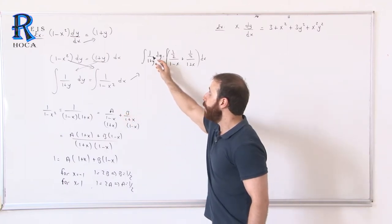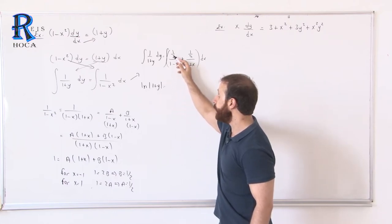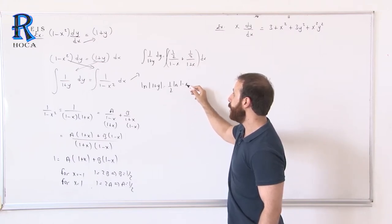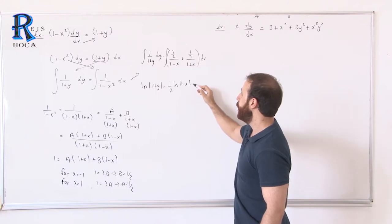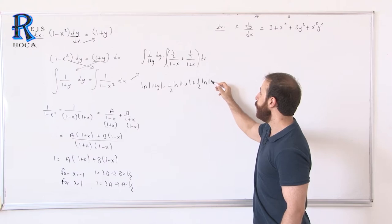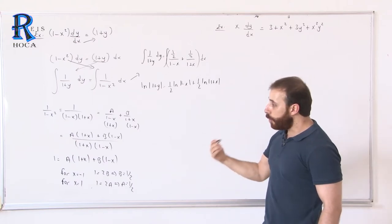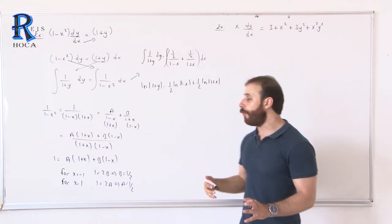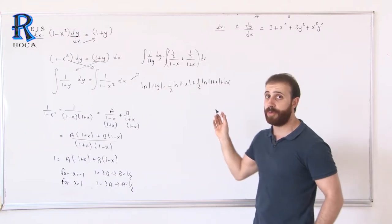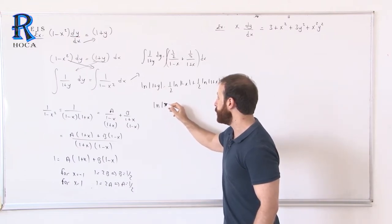Now let's take the integrals. The left side gives ln|1 plus y|. On the right, the integral of (1/2) over (1 minus x) gives (1/2) ln|1 minus x|, and the integral of (1/2) over (1 plus x) gives (1/2) ln|1 plus x|. As mentioned in the previous video, when all terms are logarithmic, we write the constant as ln c to combine everything neatly.